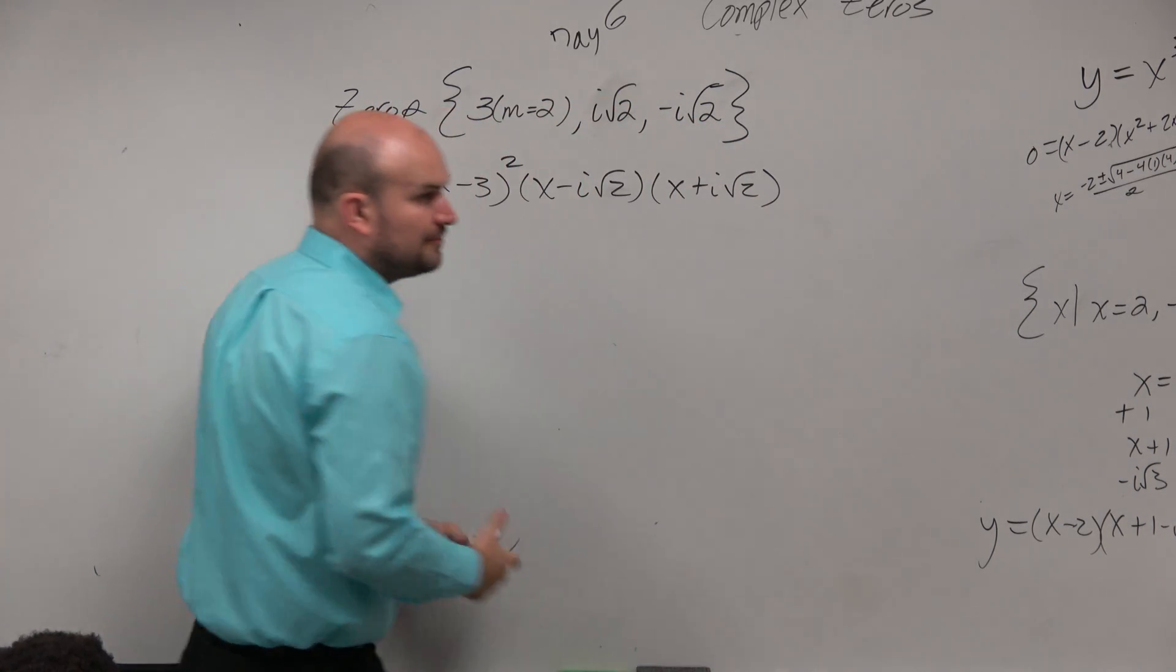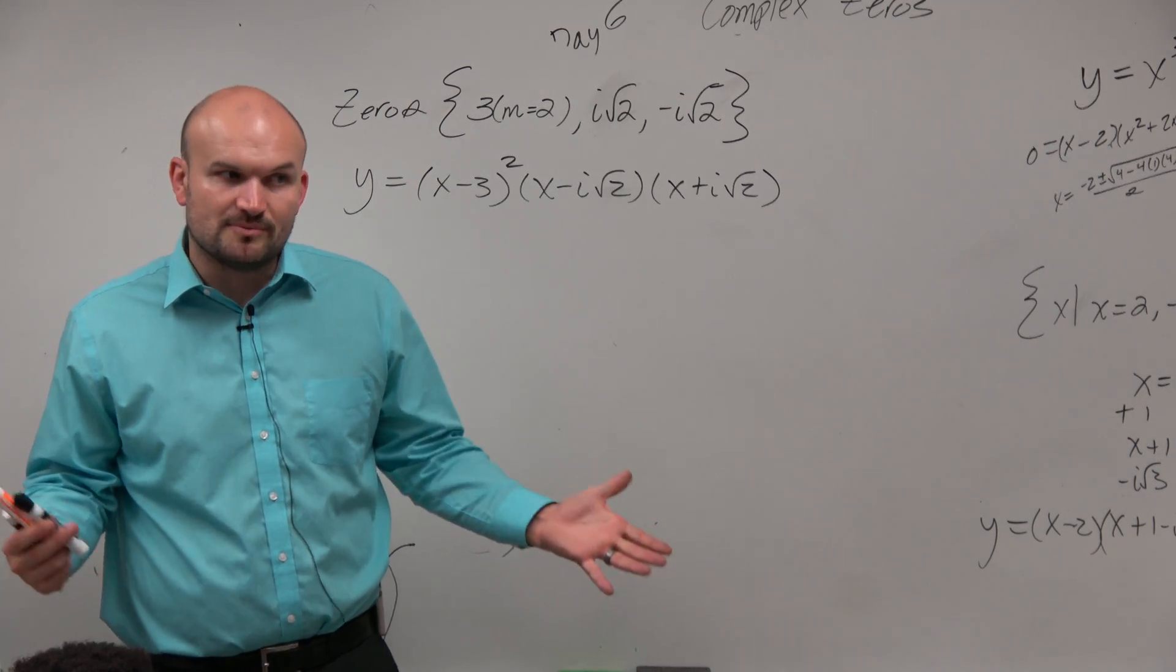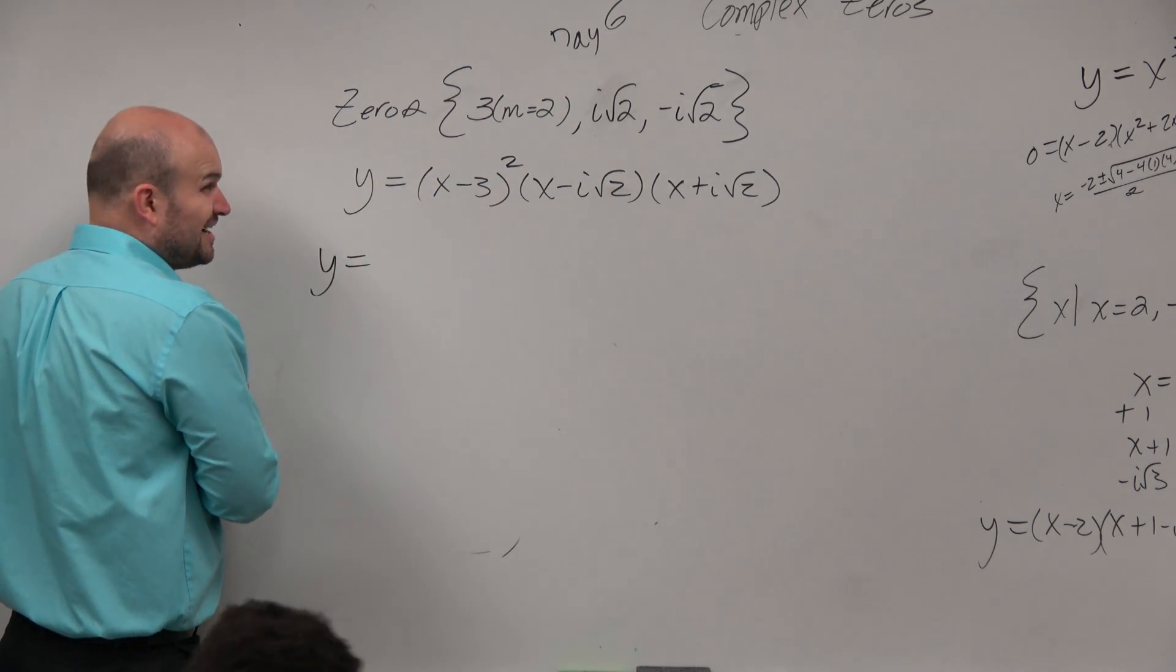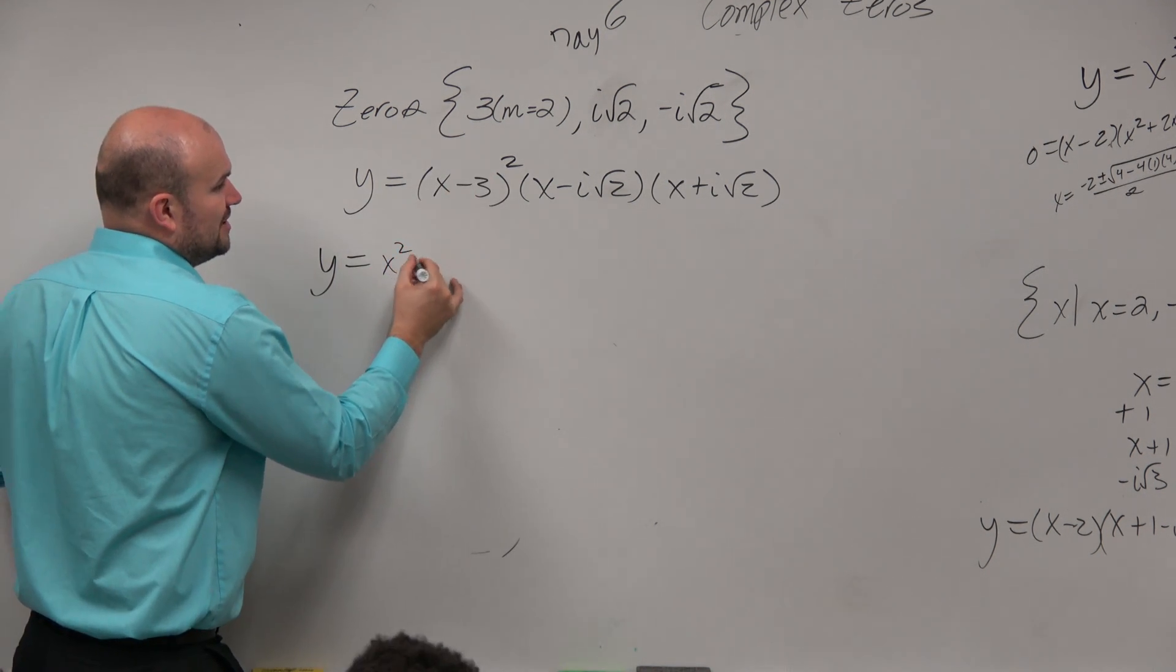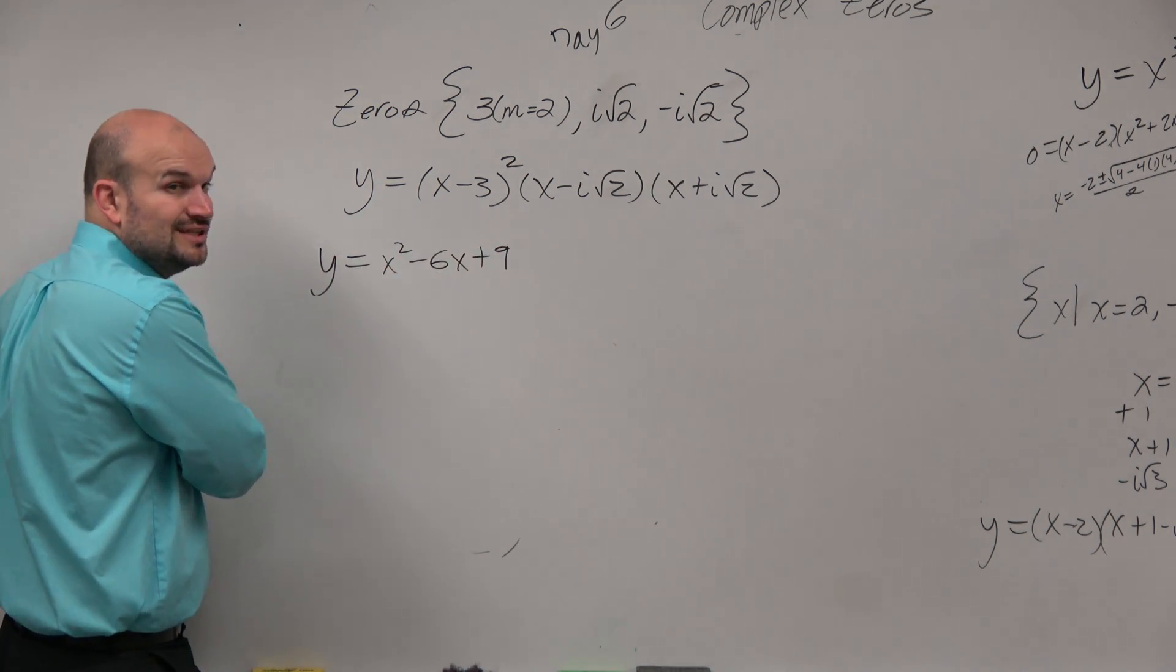OK, so now where the really fun stuff happens is the multiplying. That's what we're here for, is the multiplying with imaginary numbers. So we've done enough of these. It's binomial squared. x squared minus 6x plus 9. Do FOIL if you still need to. OK?